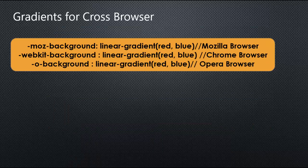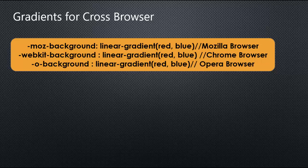For cross-browser gradients, different prefixes are needed. For Mozilla browsers, use -moz- before the gradient property. For Chrome, Safari, iPhone, or Android browsers, use -webkit- before the gradient property. For Opera browser, use -o- before the gradient property.